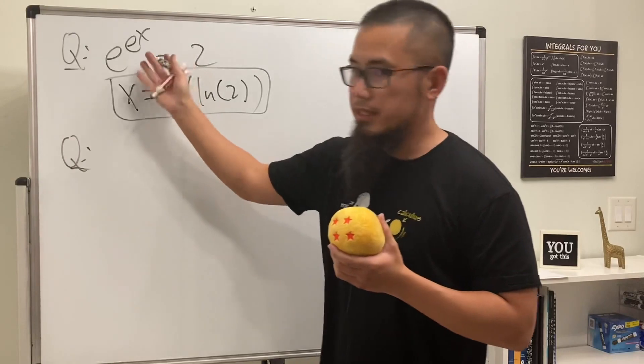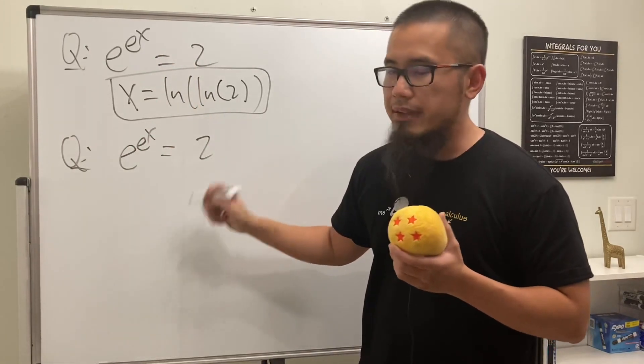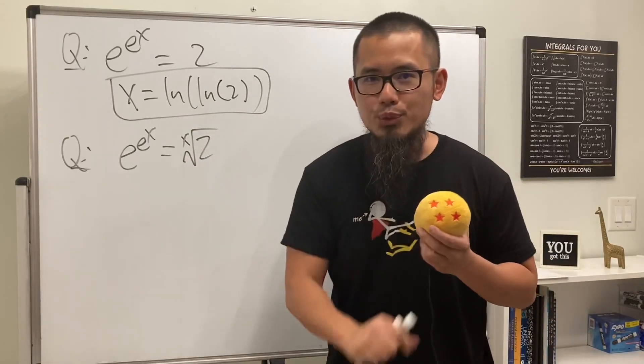Now for the second question, I will still put this down again, e to the e to the x, and that's still equal to 2. But this time though, I would like to put the 2 inside of the x root. So now, what's x? I'll give you guys 5 seconds, 5, 4, 3, 2, 1.